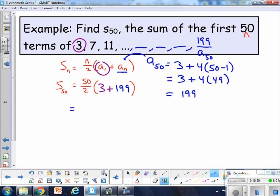And now we should be able to calculate this out. 25 times 3 plus 199 is 202. And 202 times 25 gets me my final answer for a sum of 5,050.